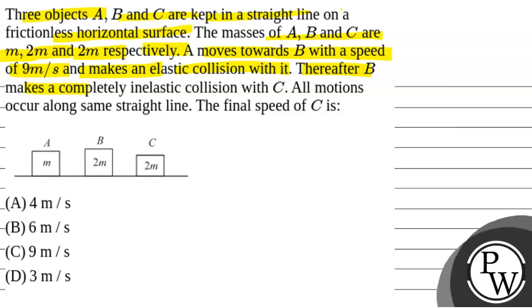Thereafter, B makes a completely inelastic collision with C. All motions occur along the same straight line. The final speed of C is...